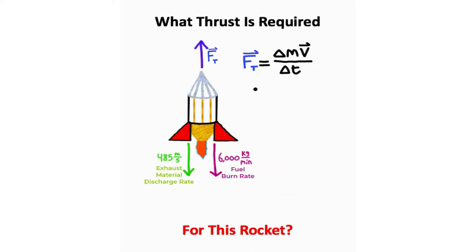So now we'll go over propulsion, and we have this rocket, and we're trying to find the thrust. Now I have an equation for thrust, which is the change in mass times velocity divided by time.